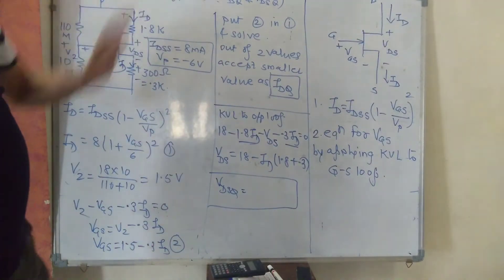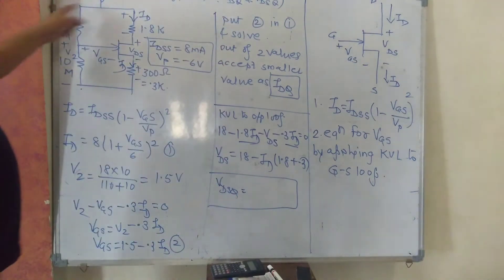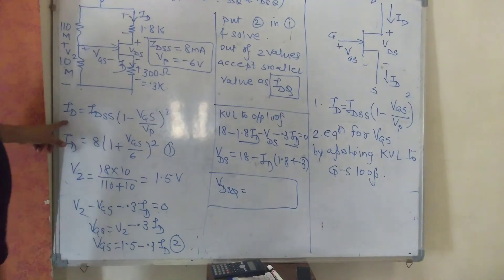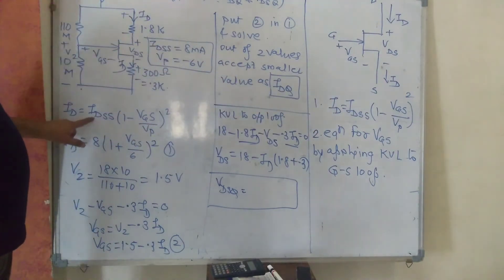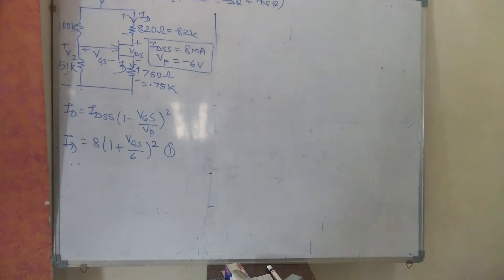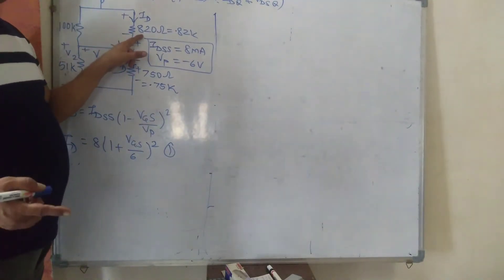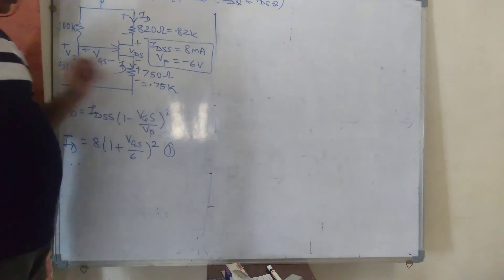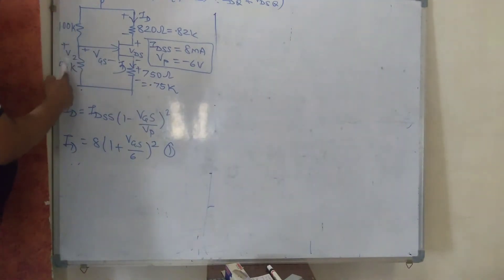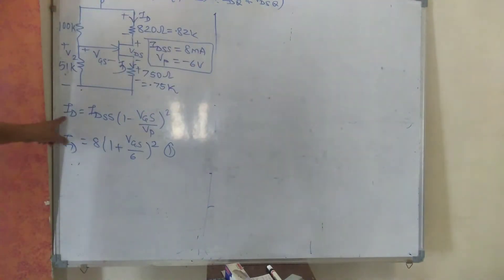In FET, the Q point means calculating ID and VDS. Now I have changed the data for a second numerical. The resistance 820 ohms is converted to kilo ohms: 0.82K. 750 ohms becomes 0.75K. The gate resistors are 100K and 50K — both already in kilo ohms. ID = 8 milliampere, VP = minus 6.